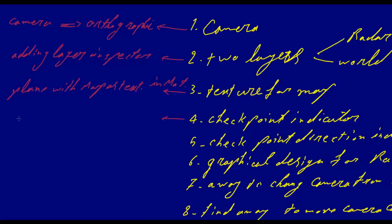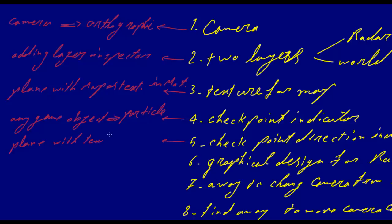Checkpoint indicator — this is interesting. We can use any game object here. But in the bootcamp case, they used a particle system. We'll take a look at that. Checkpoint indicator direction — the way the bootcamp had done this, which I liked very much, was very simple: a plane again with texture in material. The graphical design is also a plane with texture in material, that has alpha for transparency.